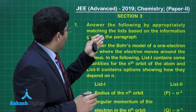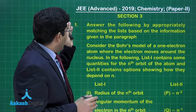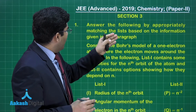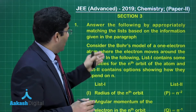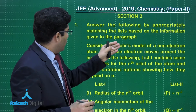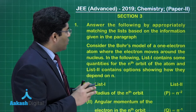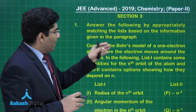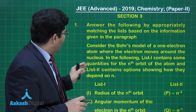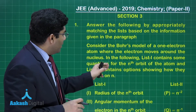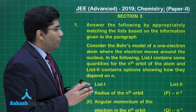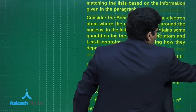In section 3, question number 1: answer the following by appropriately matching the list based on the information given in the paragraph. The paragraph asks us to consider Bohr's model of a one-electron atom where the electron moves around the nucleus. List 1 contains some quantities for the nth orbit of the atom, and list 2 contains options showing how they depend on n. We have to match them.